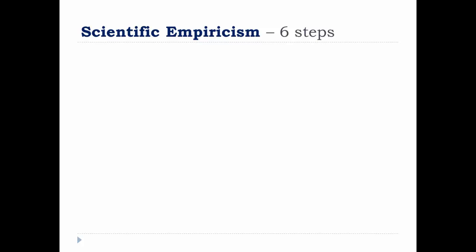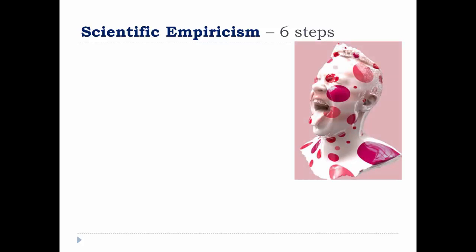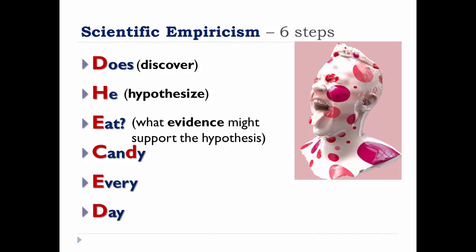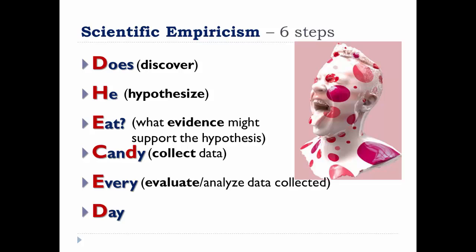The steps may be difficult to remember, so here's a mnemonic device: 'Does he eat candy every day?' The D in 'does' stands for Discover. H stands for Hypothesize. The first E stands for Evidence—determining what evidence would be considered appropriate to support the hypotheses, not the gathering of evidence, which happens in the next step. C stands for Collect data. The second E is for Evaluating or analyzing the evidence collected. And D is for Defending study results.